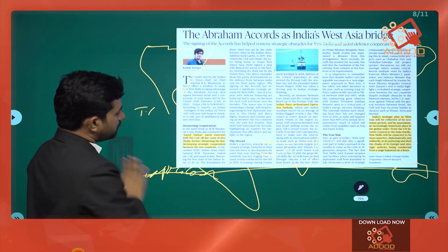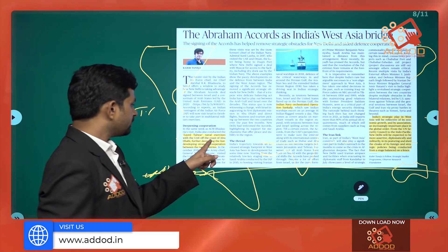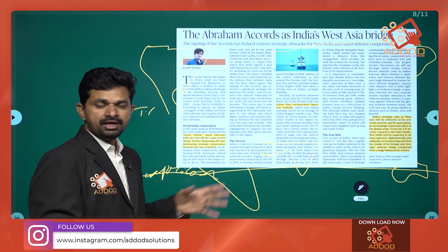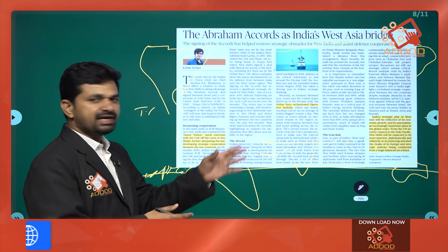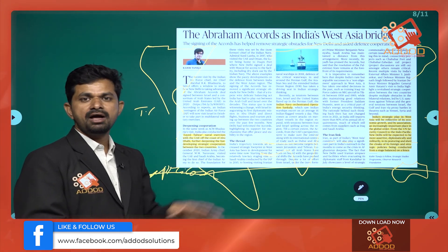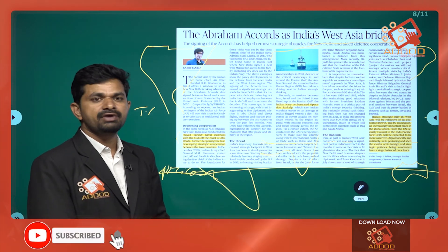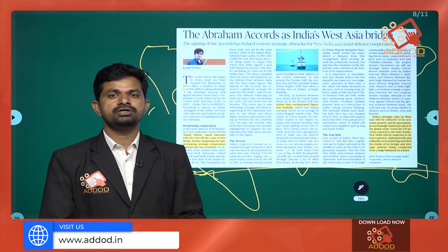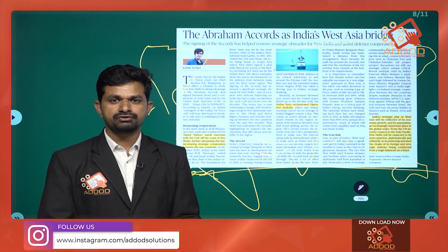There is also the Zayed Talwar naval exercise with the UAE off the coast of Abu Dhabi in the Gulf. This Gulf coast is an extension of the Arabian Sea, which is part of the Indian Ocean. India recently chaired a discussion on Indian Ocean Region maritime security. Operation Sankalp is another initiative where India asserted its position in the Indian Ocean Region. These developments are a good sign that countries are getting closer to avoid conflicts and promote socio-economic development.